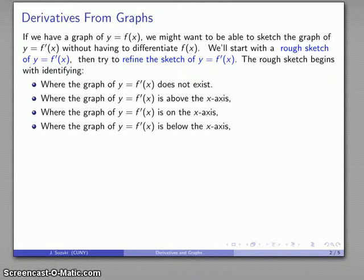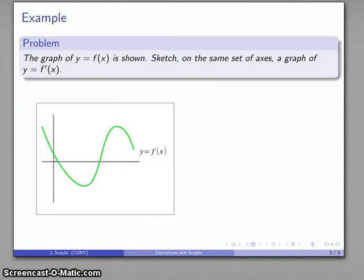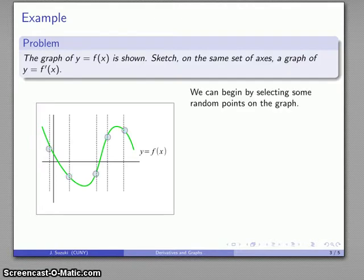Once we can identify these points, we can connect the dots, and later on we'll refine our sketch. So let's consider a graph: here's y equals f of x, and we want to sketch on the same set of axes a graph of y equals the derivative. The derivative corresponds to the slope of the line tangent to the graph, so let's pick a couple of random points on the graph.